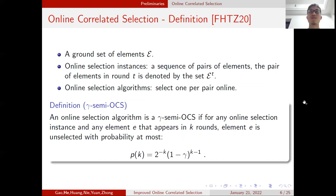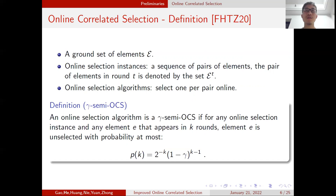Let's see the definition of Online Correlated Selection. We are given a ground set of elements E. An online selection instance is a sequence of pairs of elements, where the pair in round t is denoted by set E_t. The online selection algorithm selects one element per pair online. An algorithm is called gamma semi-OCS if, for any online selection instance and any element e appearing in k rounds, element e is unselected with probability at most 2^{-k} times (1 - gamma)^{k-1}. The parameter gamma describes the negative correlation introduced in the selection process, and we want to optimize gamma to be as large as possible. A trivial algorithm achieves gamma equal to 0 by selecting independently and uniformly at random in each round.